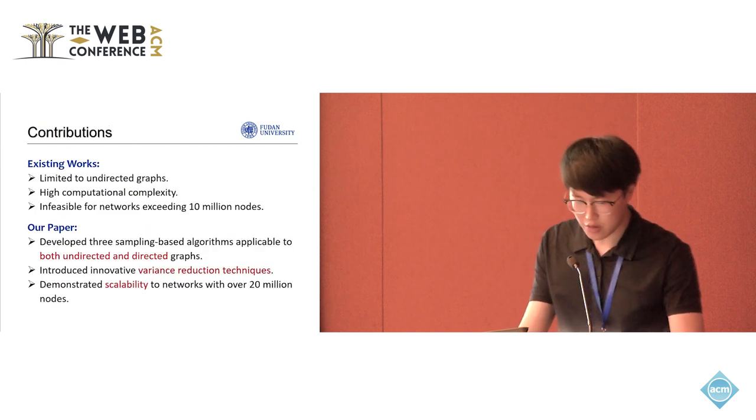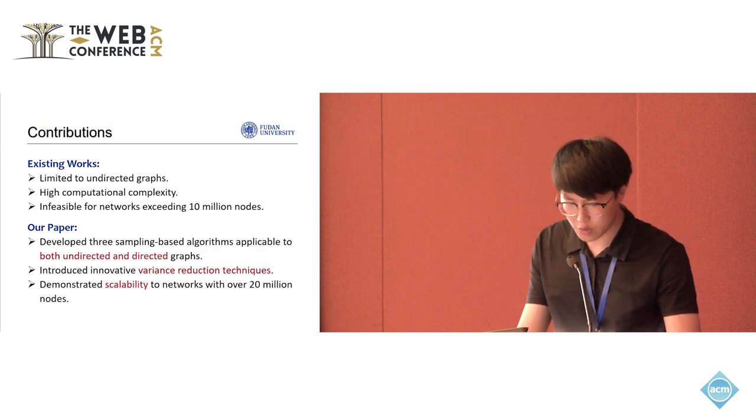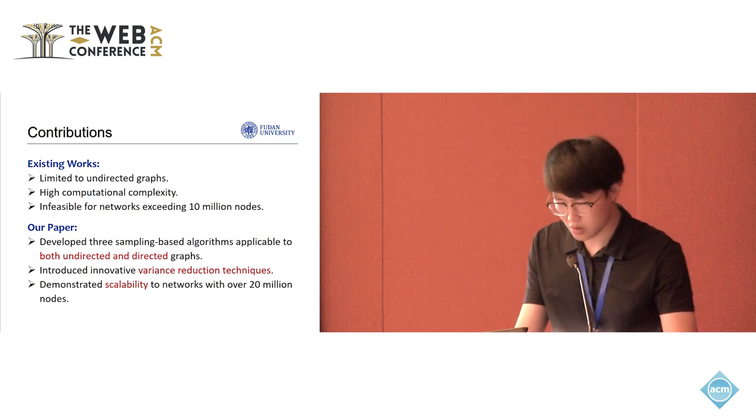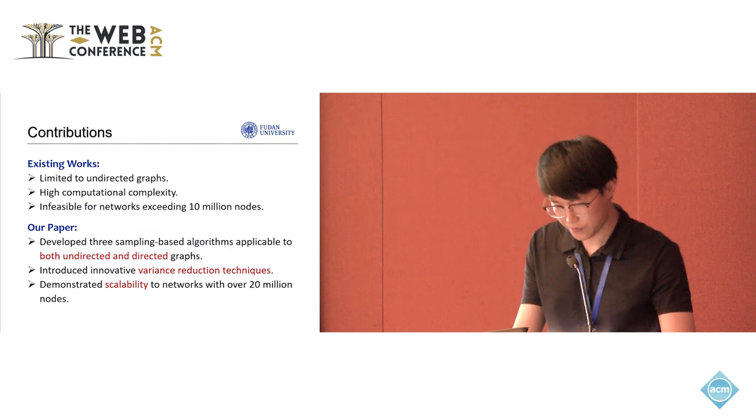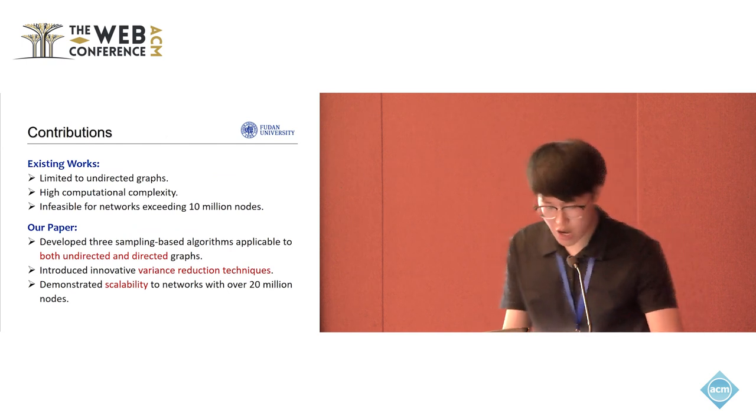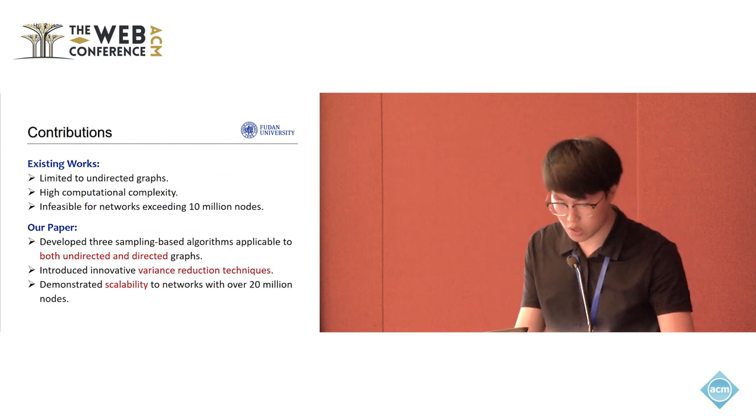Unlike existing methods, which are mainly limited to undirected graphs and struggle with larger networks, our paper presents three sampling-based algorithms. These algorithms are applicable to both undirected graphs and directed graphs, and incorporate innovative variance reduction techniques.